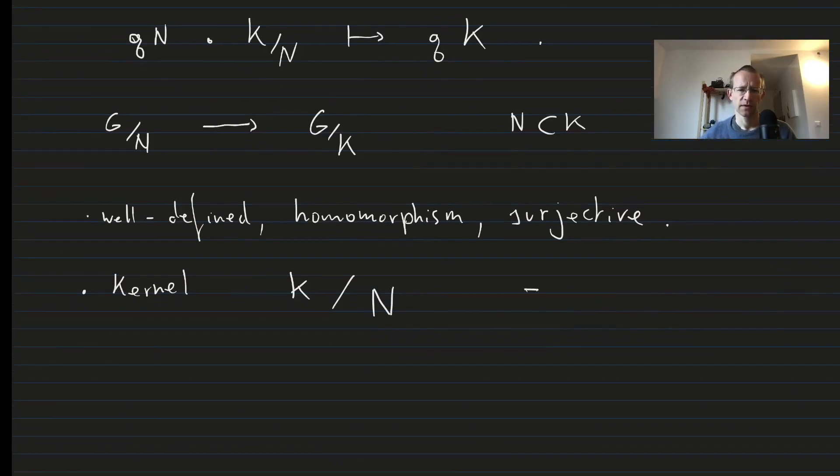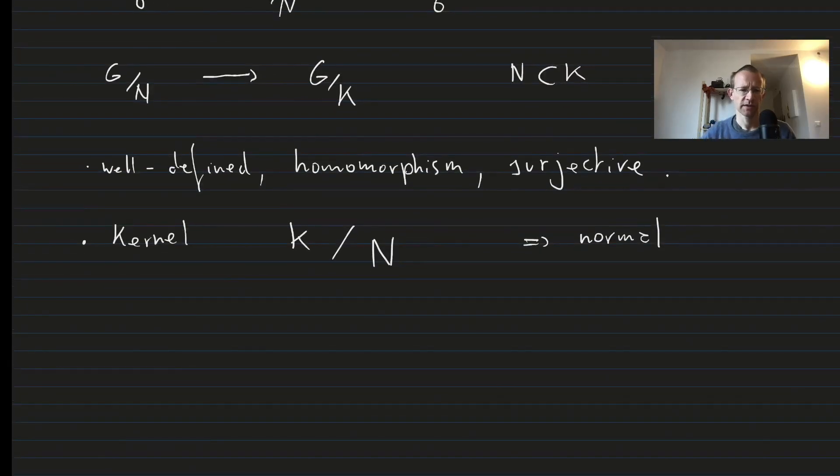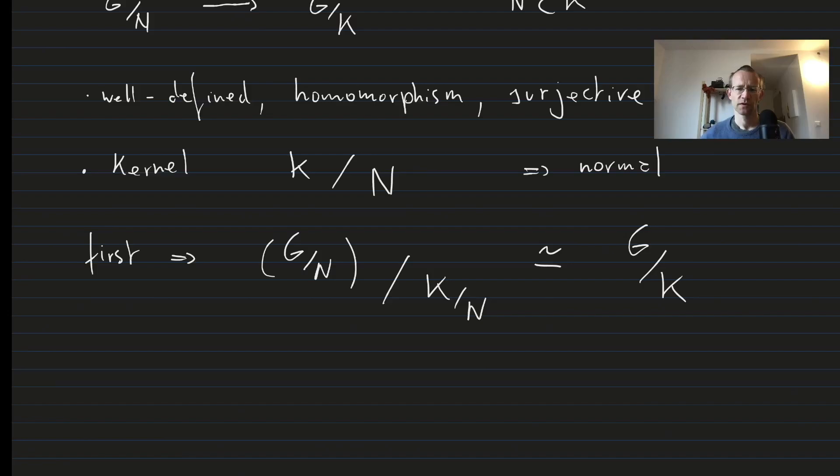As a consequence, because this is a kernel, this is a normal subgroup, and we can divide by it. And moreover, the first isomorphism theorem implies now that G over N divided by the kernel of the homomorphism, which is K over N, is isomorphic to the image, and because this map is surjective, this is G over K. So this proves the third isomorphism theorem.